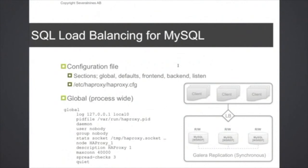So let's look at a simple configuration file for HAProxy. The configuration is a simple text file and it consists of multiple sections. We have a global section which is for process-wide settings. We have a frontend section which is for incoming connections from clients — that's where you bind the network device and port. Then there's the backend section which is for outgoing connections to the back-end servers. You can also specify both frontend and backend settings combined using the listen section. And you have a defaults section which provides default settings for the sections mentioned above.